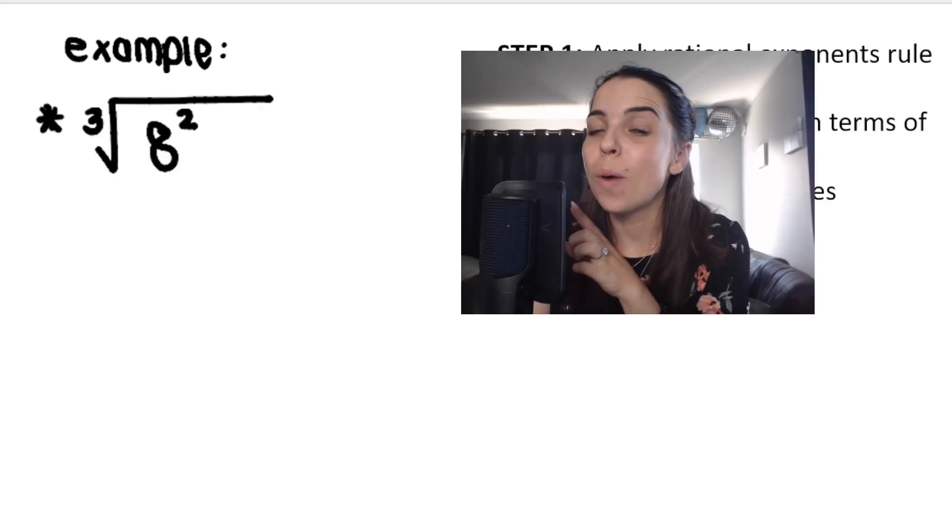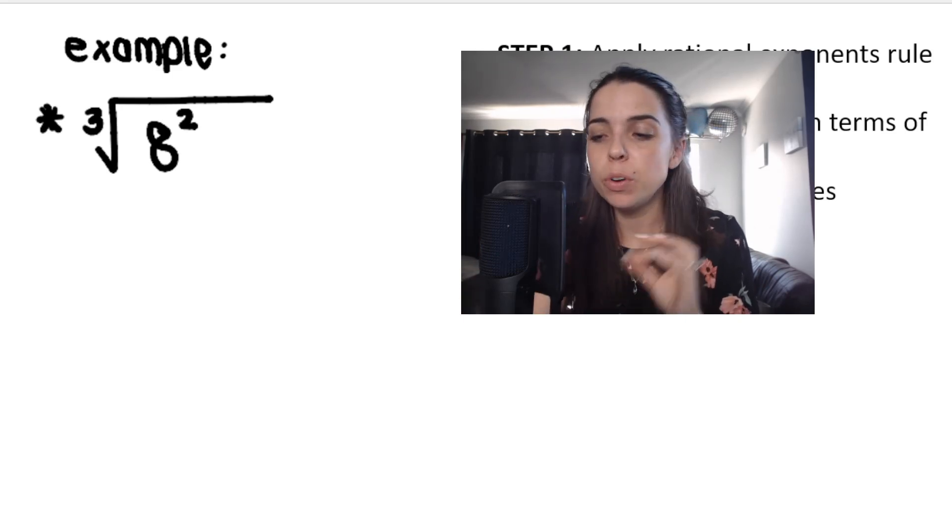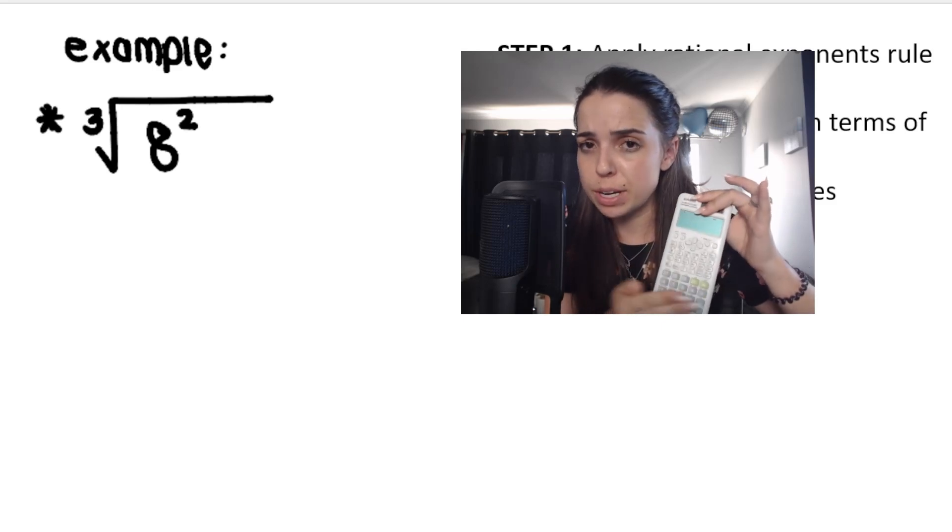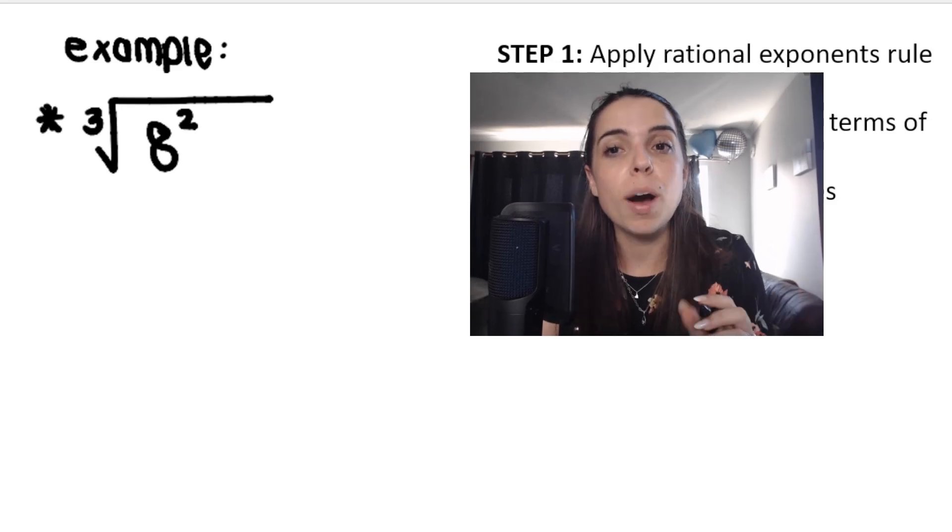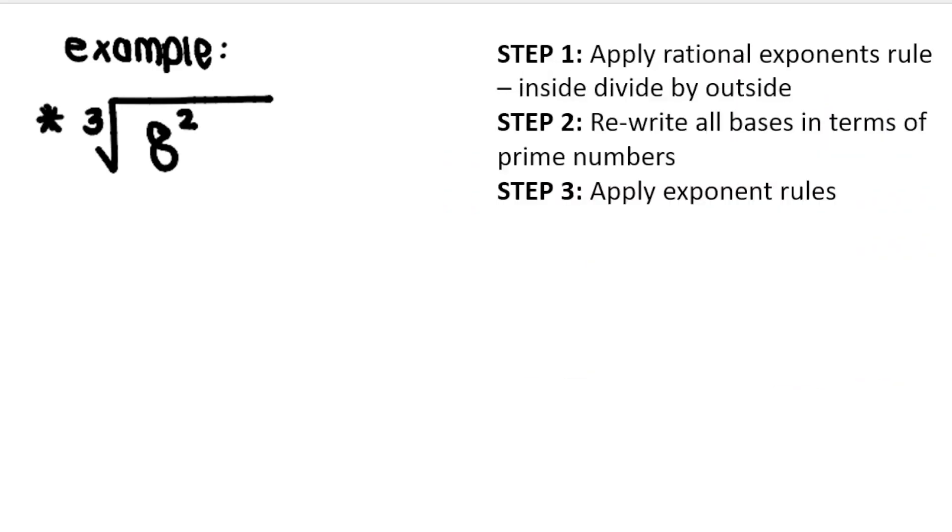So what if I asked you to do one like this? But I said, don't use a calculator. Show all your steps. So in other words, I don't want you to take what it says on the screen, type that into a calculator and press equals. I need to see your steps. I need to see you apply the rules that I'm teaching you. So step one, apply this new rule that I taught you, the rational exponents rule. Inside divided by outside.